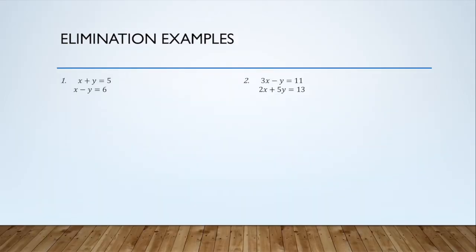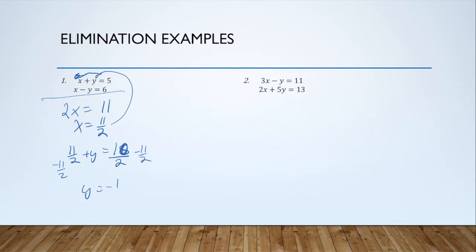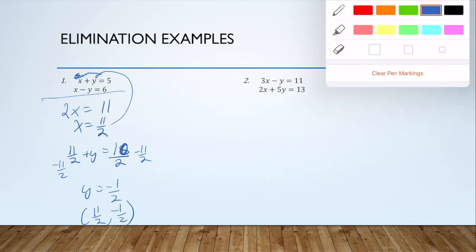In example 1, I've got x plus y is 5 and x minus y is 6. Lucky for me, the y's already have coefficients that are additive inverses. So I can add these together. I get 2x equals 11, so x is 11 halves. I can substitute that back in to either equation to solve for y. If I have 11 halves plus y is 5, well 5 is 10 halves. I subtract 11 halves from both sides. I get y equals negative 1 half. So the solution is when x is 11 halves, y is negative 1 half.